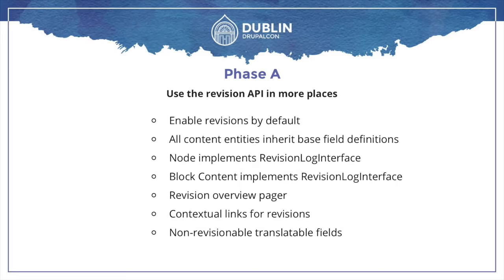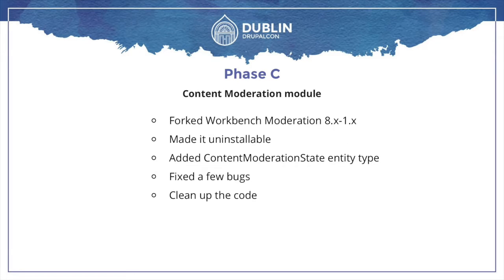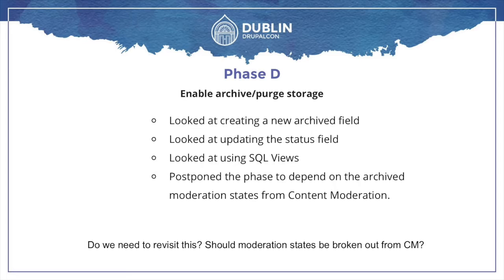Phase C is probably our only fully done phase — content moderation is now in core as an experimental module. There's still a lot to do to make it stable, but as a phase it's pretty much done. We put Workbench Moderation into core, renamed it as Content Moderation, made it uninstallable since experimental modules need to be uninstallable, and fixed a few bugs.